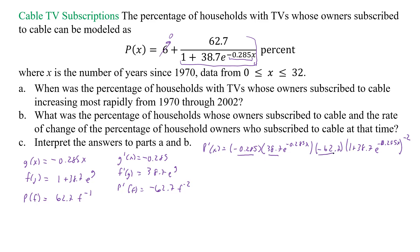Like our last time we had a logistic that we had to take the second derivative of, I'm going to multiply those constants together: negative 0.285 times 38.7 times negative 62.7, and that equals positive 691.54965. So p prime of x equals 691.54965 e to the negative 0.285x times 1 plus 38.7 e to the negative 0.285x to the negative 2.